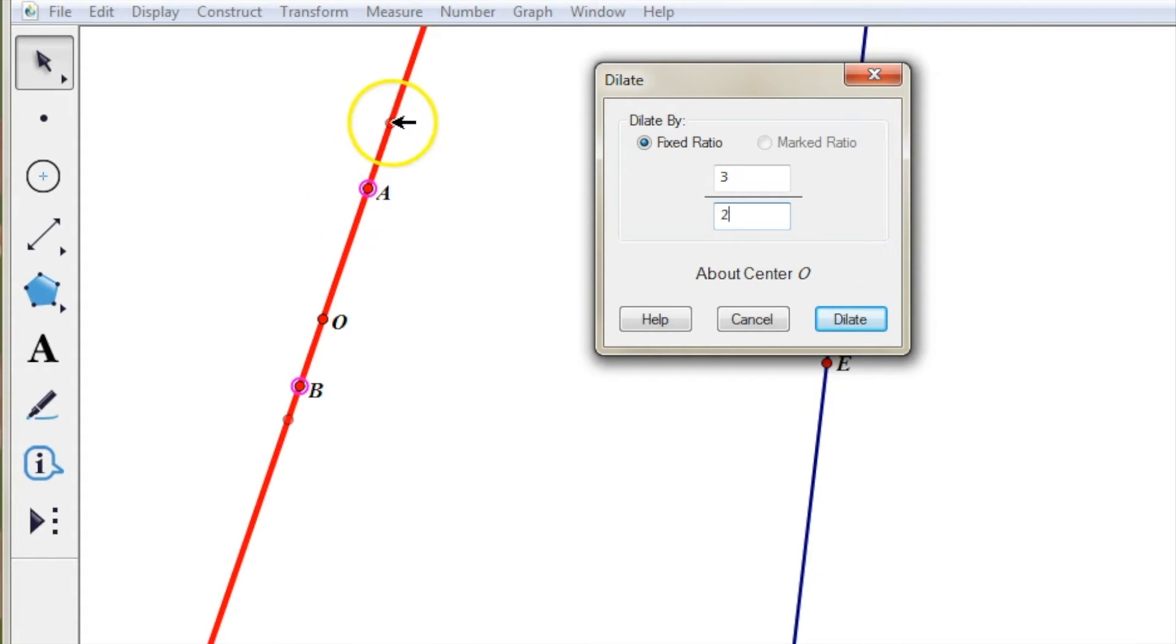If I wanted to go one and a half times bigger, there's one and a half, there's the A prime, there's the B prime. If I wanted to go half the size, you see them moving here.